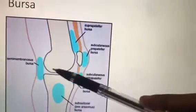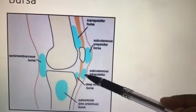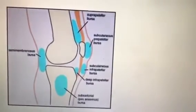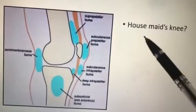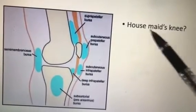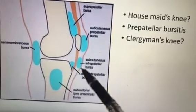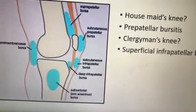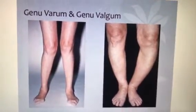Regarding bursae: above the patella is the suprapatellar bursa; in front is the prepatellar bursa; above the ligamentum patellae is the subcutaneous infrapatellar bursa; and deep to it is the deep infrapatellar bursa. Pre-patellar bursitis is called housemaid's knee. Subcutaneous infrapatellar bursitis is called clergyman's knee, due to the kneeling-down posture. The bursa that communicates with the knee joint is the suprapatellar bursa. Genu varum is bow-knee and genu valgum is knock-knee.